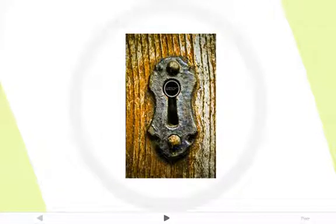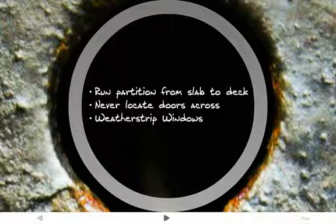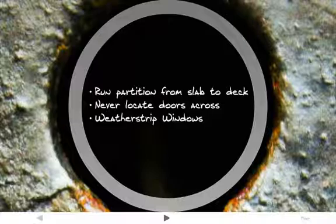Sound will pass through any available opening — remember, that has to do with diffraction — like a keyhole, a space at the bottom of a door, or a crack that exists between a ceiling and a wall. For rooms that require acoustic privacy, you want to run the partition from the slab to the deck or the floor slab above. Never locate doors directly across from each other, and weatherstrip windows to seal out any sound from outside.